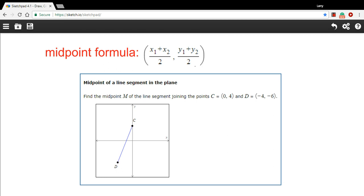So really this is just plugging in a few numbers. The x coordinates are 0 and negative 4, so I would put 0 plus negative 4 divided by 2, comma, and the y coordinates 4 and negative 6, so 4 plus negative 6 divided by 2.